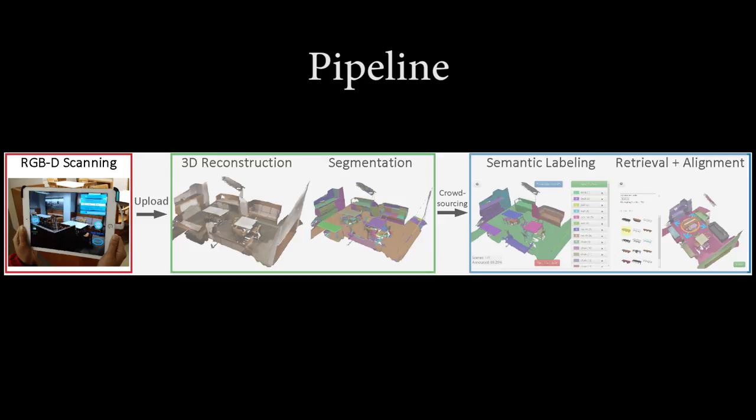To acquire this data, novice users capture an RGBD video sequence using commodity sensors and upload it to the cloud where it is reconstructed to produce a 3D mesh. Crowdsource semantic annotation tasks are then deployed to label the objects in the scene and retrieve and align CAD models to these objects.